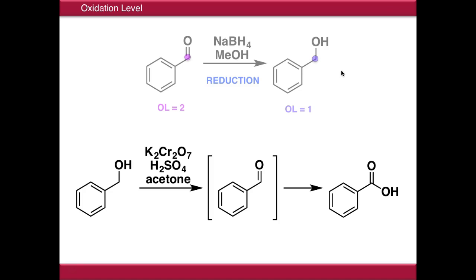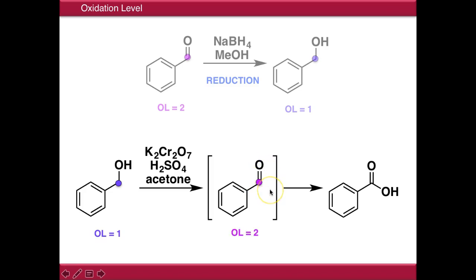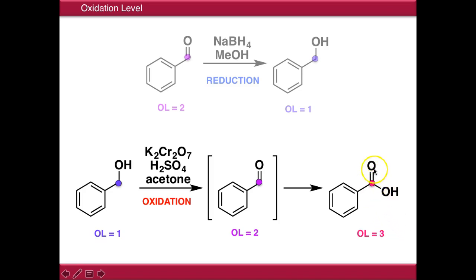In another example, benzyl alcohol reacts to form benzaldehyde and then benzoic acid. Starting with the alcohol, the oxidation level is one because it's forming one bond to oxygen. Moving to benzaldehyde, the carbon atom is now forming two bonds to oxygen, so the oxidation level increases to two — this is an oxidation. The equivalent atom in benzoic acid has three bonds to atoms more electronegative than carbon, giving oxidation level three — also an oxidation. This entire process is called the Jones oxidation.